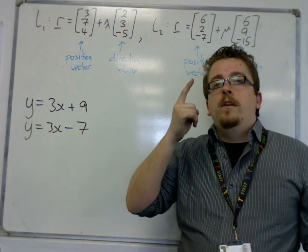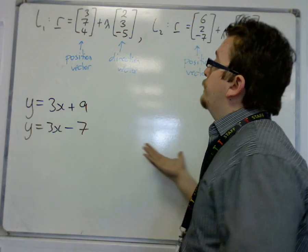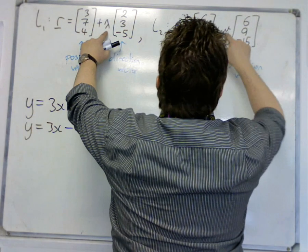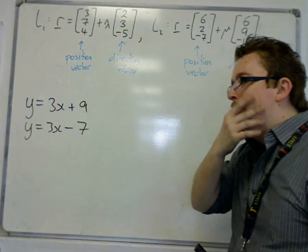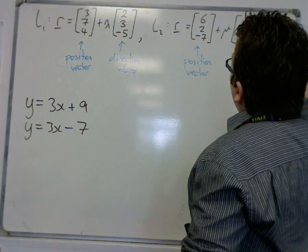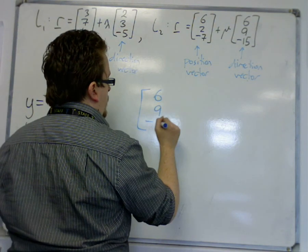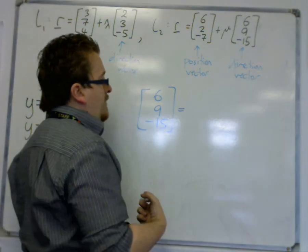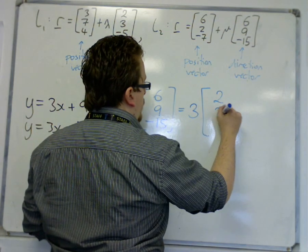However, that doesn't necessarily mean that these cannot be parallel. And what I mean by that is that the direction vector has this multiplier at the front, which allows you to really simplify a vector down like a fraction. So, 6, 9, minus 15 can effectively be simplified, or you can take a factor out of it so that we have three lots of 2, 3, minus 5.